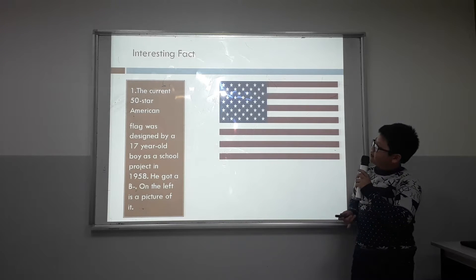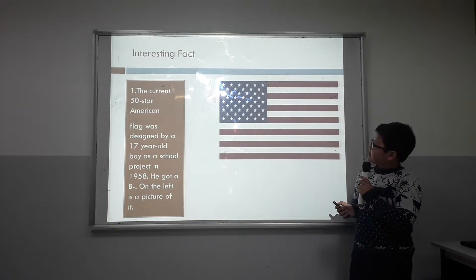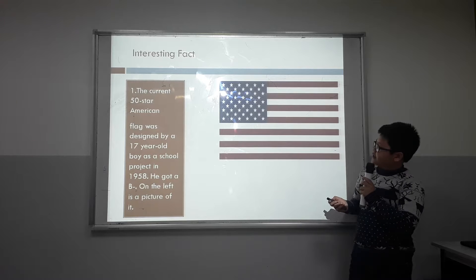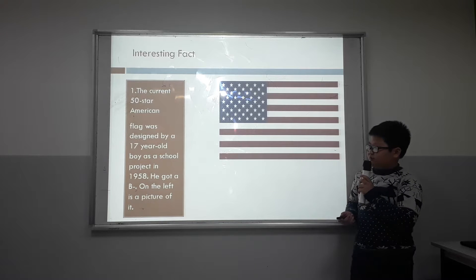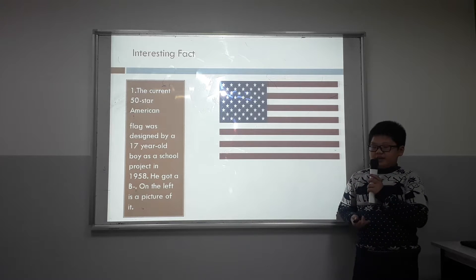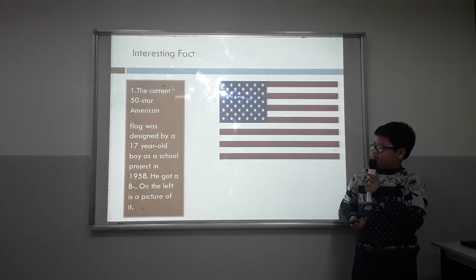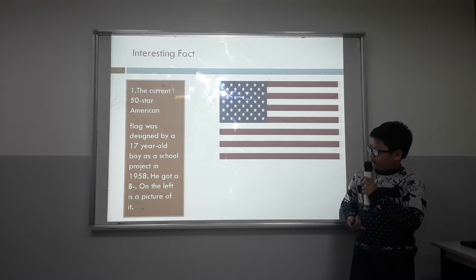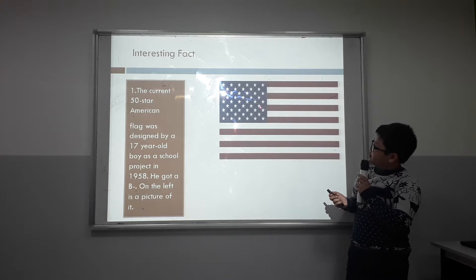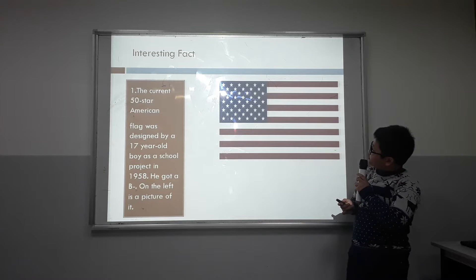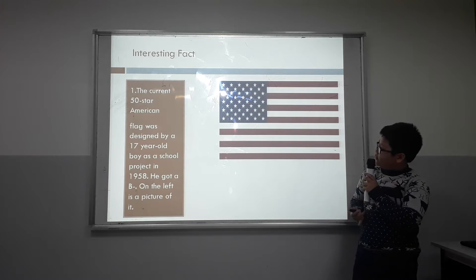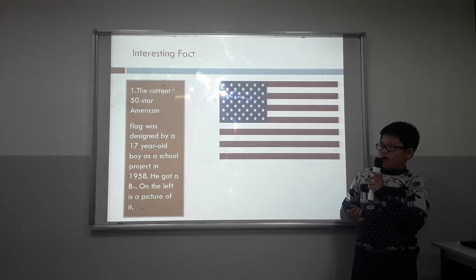And an interesting fact: as you can see here, this is the USA's current 50-star American flag, and it was designed by a 17-year-old boy as a school project in 1958. It got a B. On the left is the picture of it — you can see it has 7 red lines and 6 white lines.